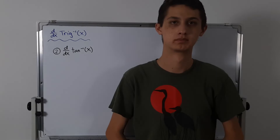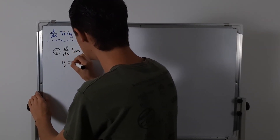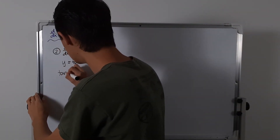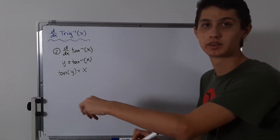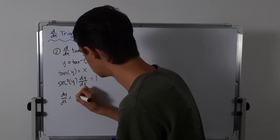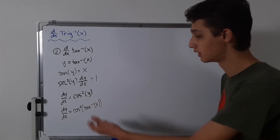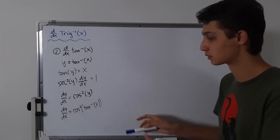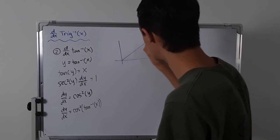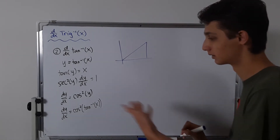Now we're going to do tangent inverse. Again, we're going to start the same way: set y equal to tangent inverse of x. Then we take the tangent of both sides, so tangent of y equals x. Then we differentiate both sides with implicit differentiation. So y is equal to tangent inverse, and I'll speed through this part. Now we're going to draw another picture, which will be slightly different since we're trying to find something different this time.